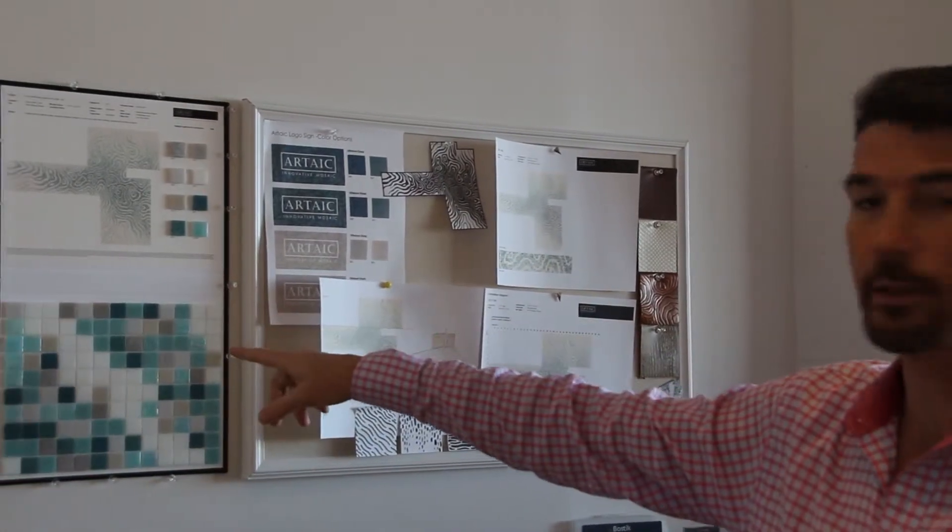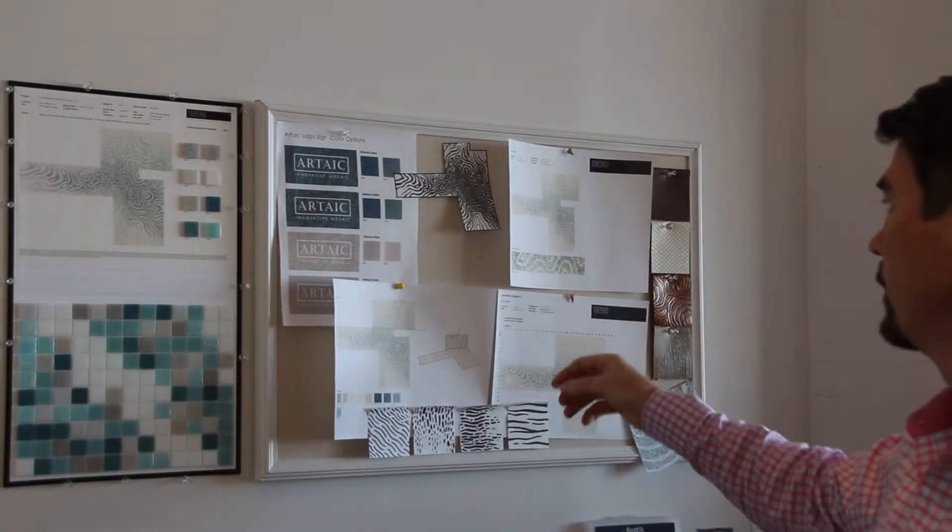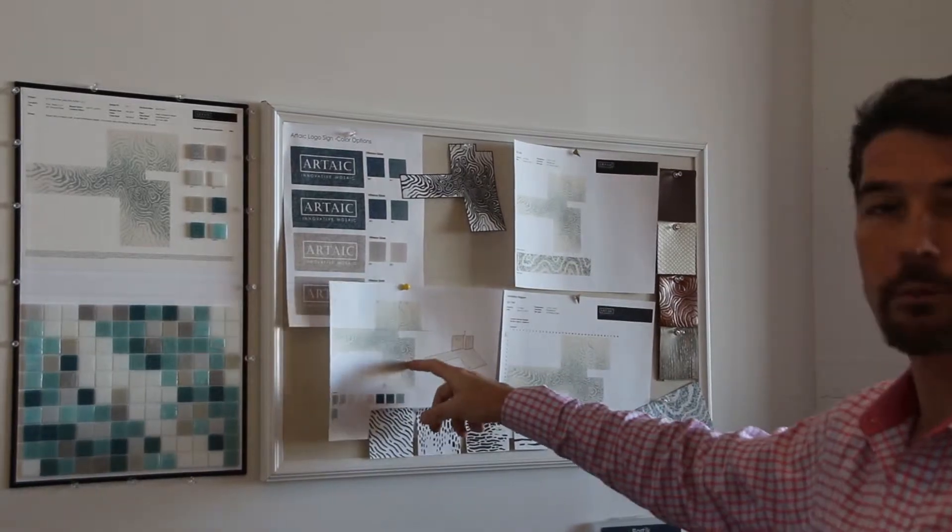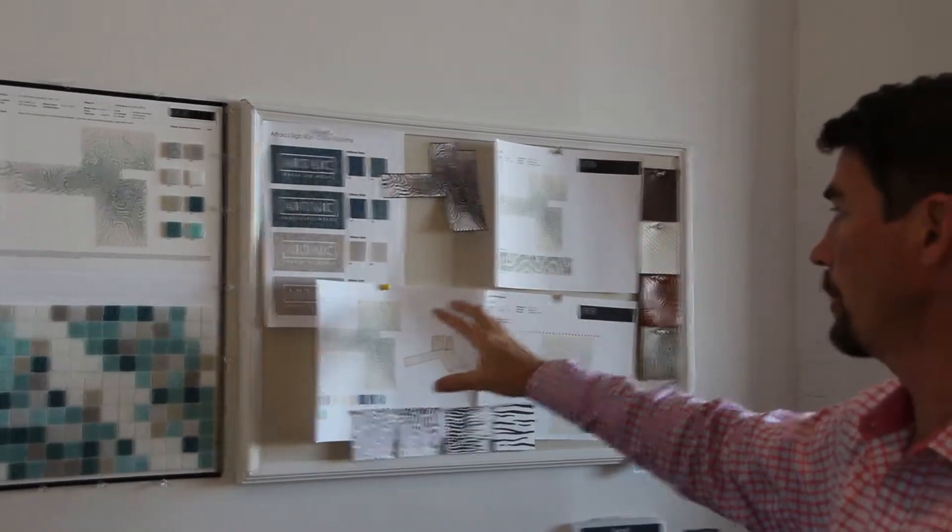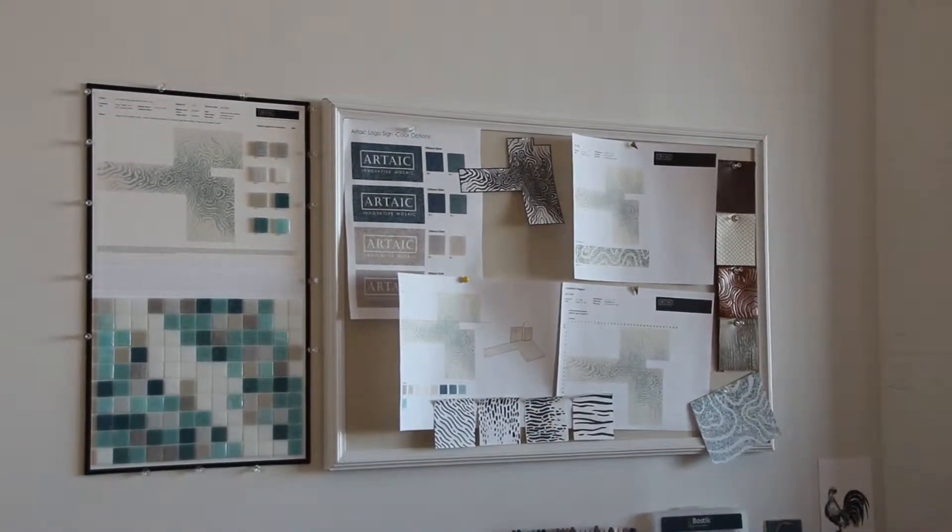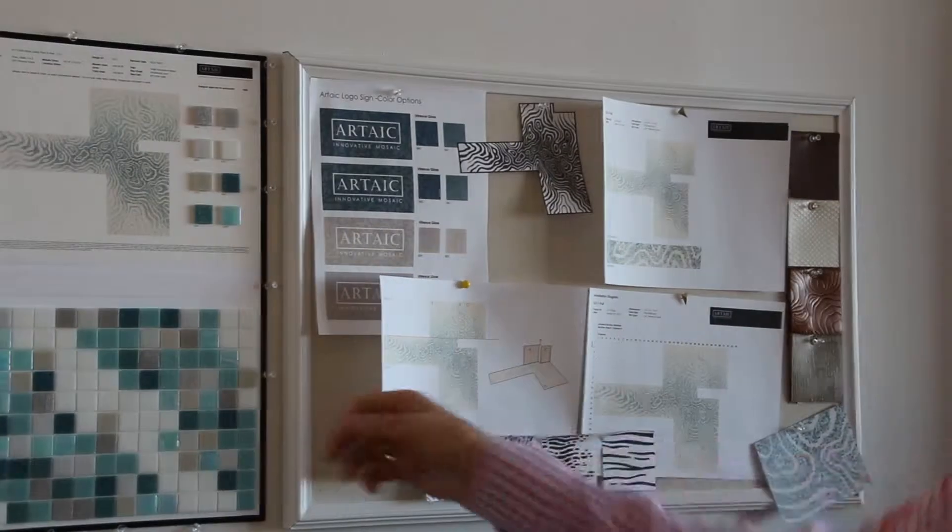These are some examples of projects we've rendered and sampled up here. This is again our lobby. So here's some different design concepts we've worked with. Once we selected one that we thought was the right one, we made a physical sample board. And once that was approved, we went into production. Speaking of physical sample boards, let's go into our physical production area and check that out.